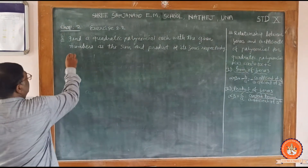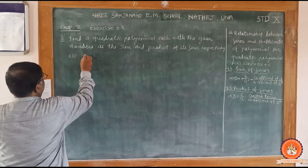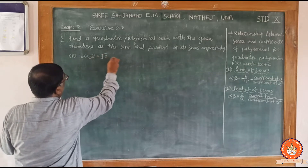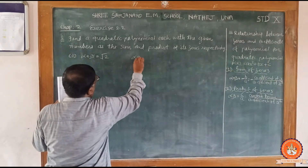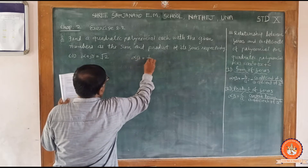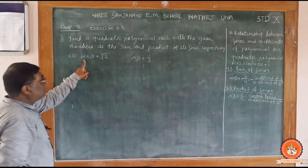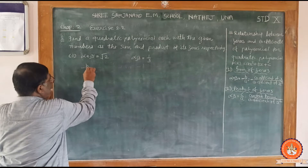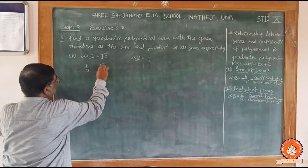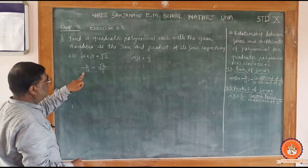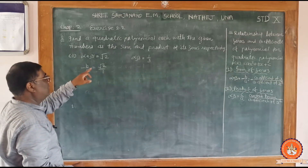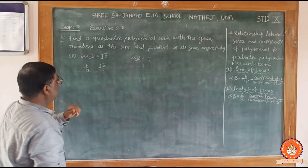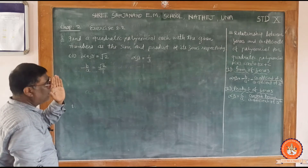Now for number 2: sum of zeros equals root 2 and product of zeros equals 1 by 3. Sum of zeros formula gives minus b upon a equal to root 2 upon 1. Since root 2 has no denominator shown, we write 1 as the denominator.